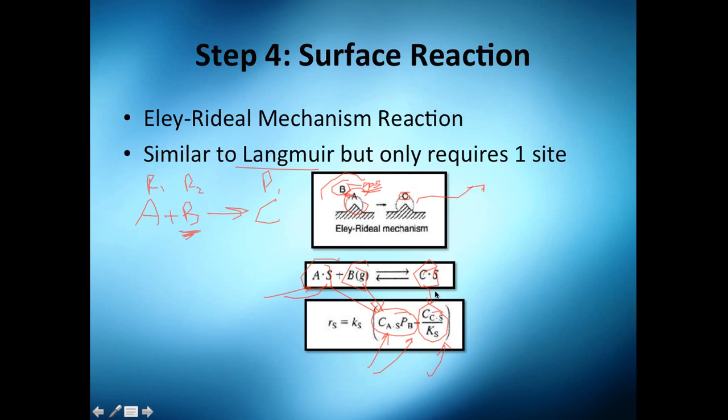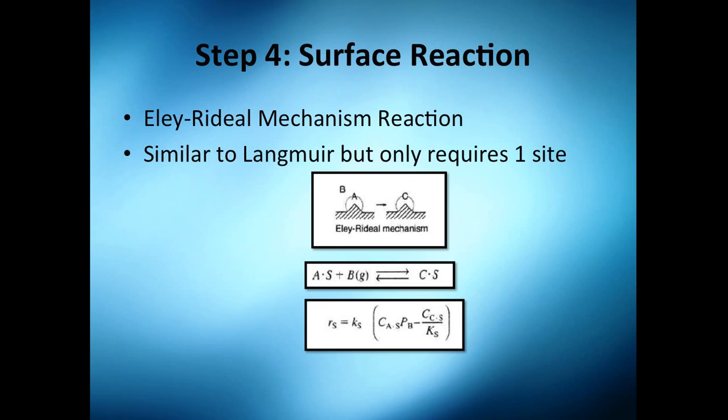That's essentially everything on the surface reaction. We're going to continue with step number five, which is desorption, and then step number six and seven, which are essentially internal and external diffusion of the product.